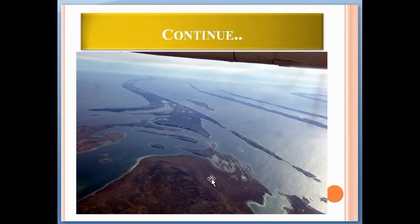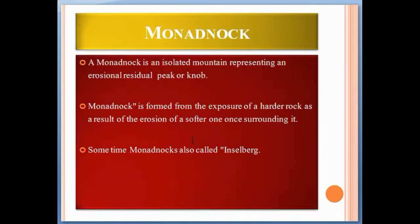Some parts are still visible here that are resistant to erosion. The second topic is the monadnock. A monadnock is an isolated mountain representing an erosional residual peak or knob. A monadnock is formed from the exposure of harder rock as a result of the erosion of softer rock surrounding it.